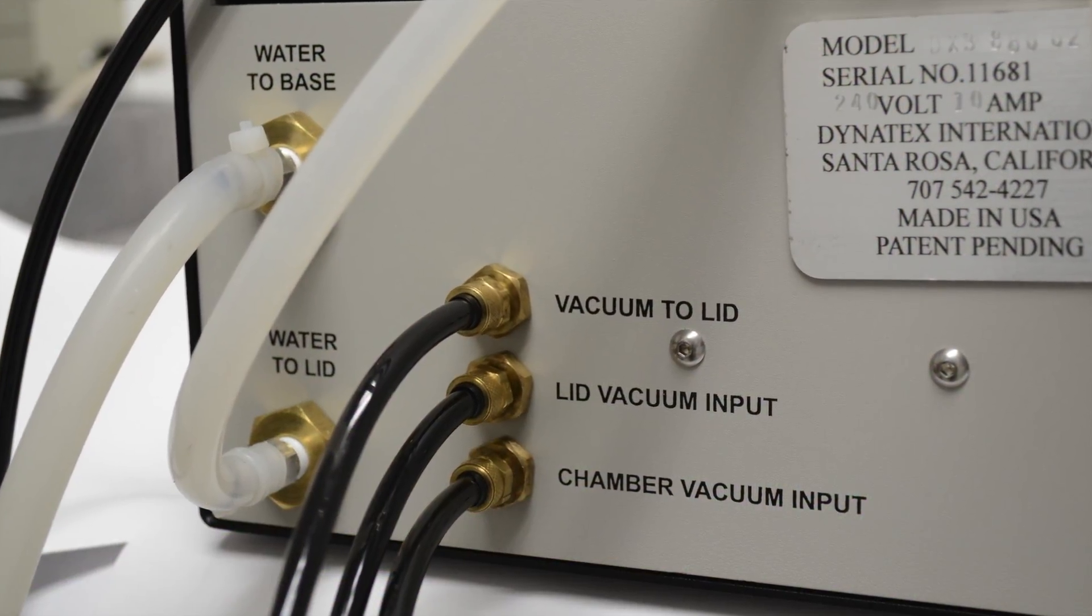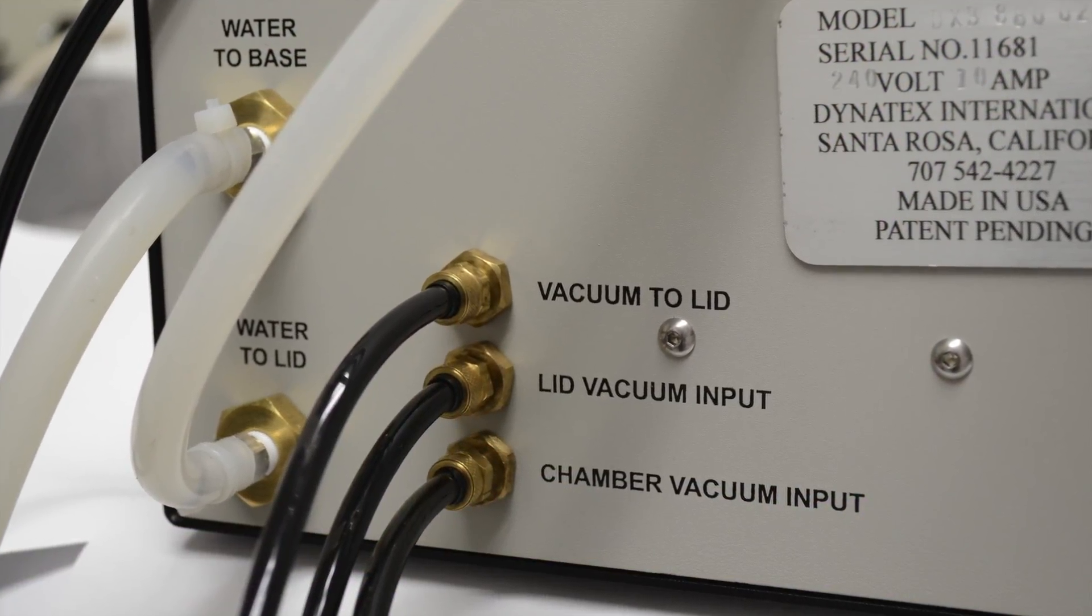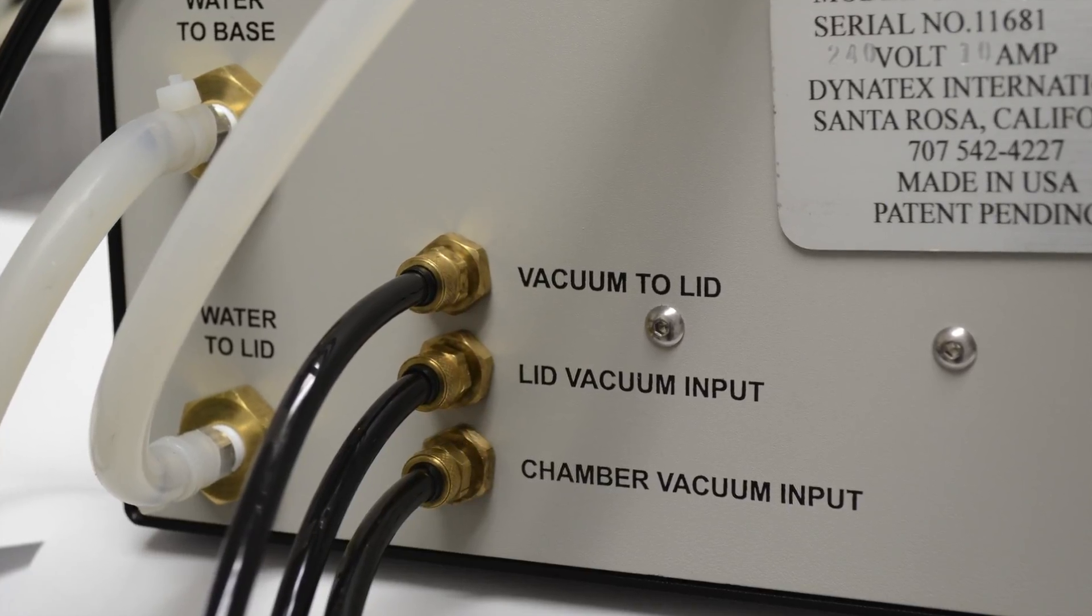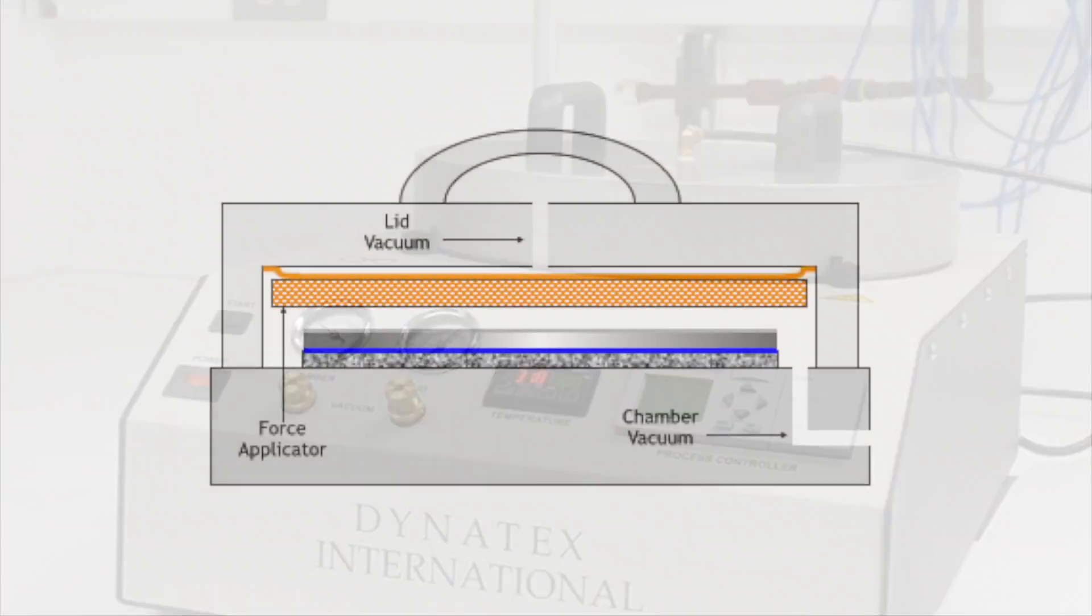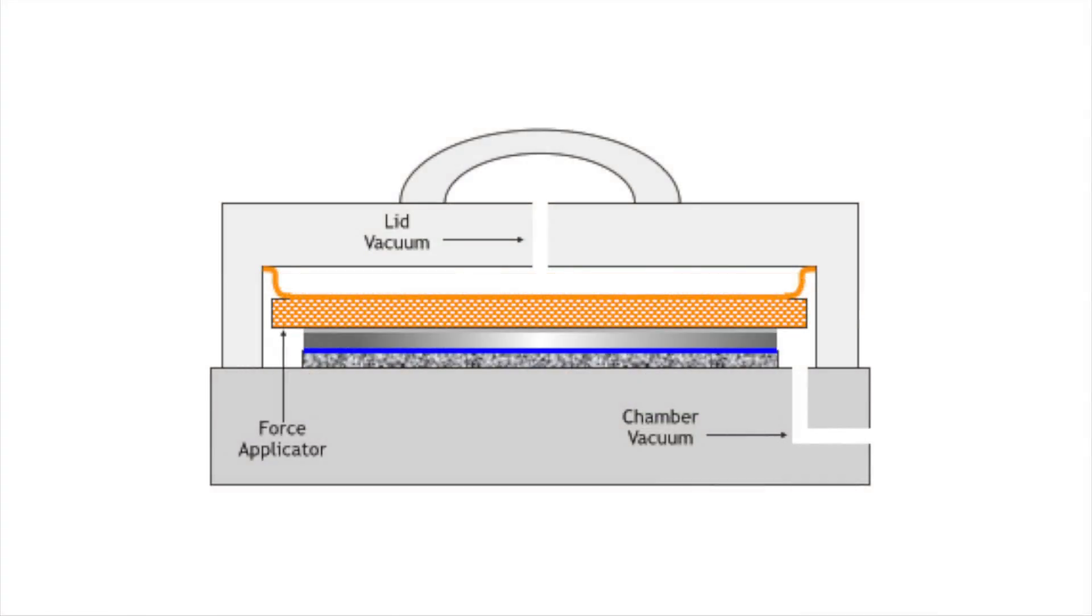The DXB880 wafer bonder achieves void-free bonding by controlling three key parameters during the bonding cycle: chamber pressure, applied force, and temperature. Regulated vacuum pressure inside the chamber eliminates voids, while the lid applies force to ensure an even bond.